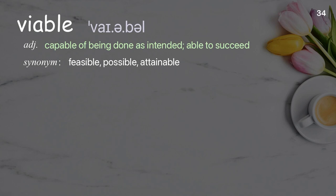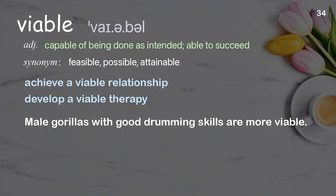Viable: capable of being done as intended; able to succeed. Examples: achieve a viable relationship; develop a viable therapy. Male gorillas with good drumming skills are more viable.